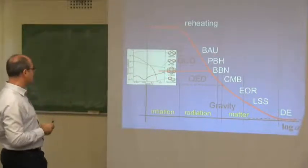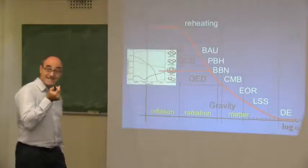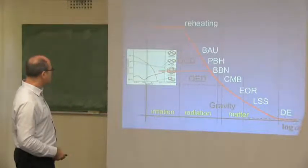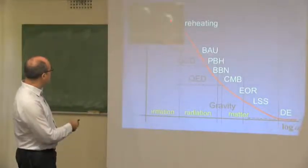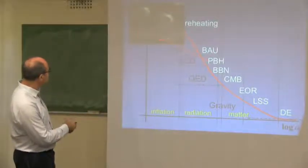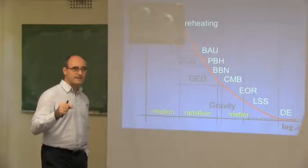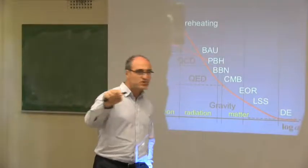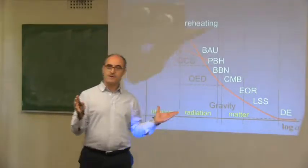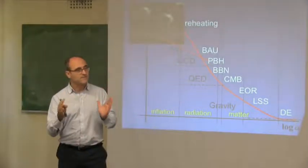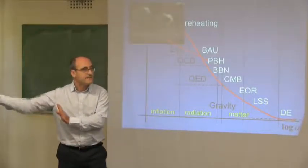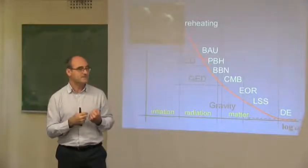Beyond this, as was pointed out, we don't really have direct evidence — we have indirect evidence. In particular, it might be that there are new phenomena: the formation of primordial black holes, which today can be seen through the inspiral of those black holes emitting gravitational waves, which recently have been detected. So we've opened up a new era where gravitational wave astronomy will, together with optical, radio, and microwave observations, help us constrain fundamental physics.